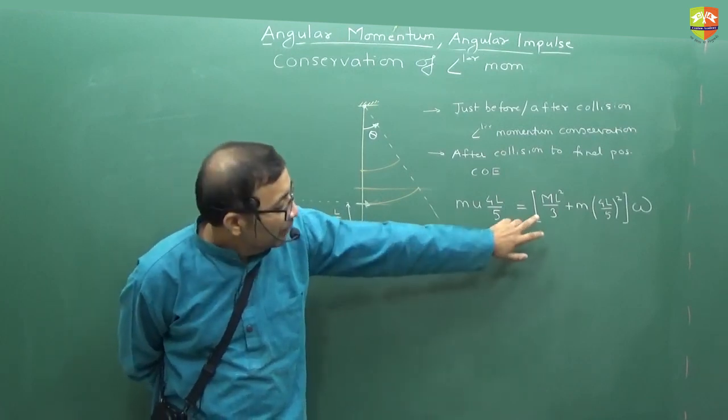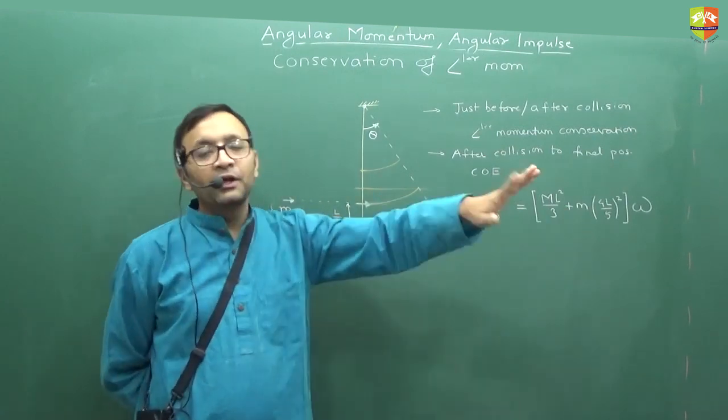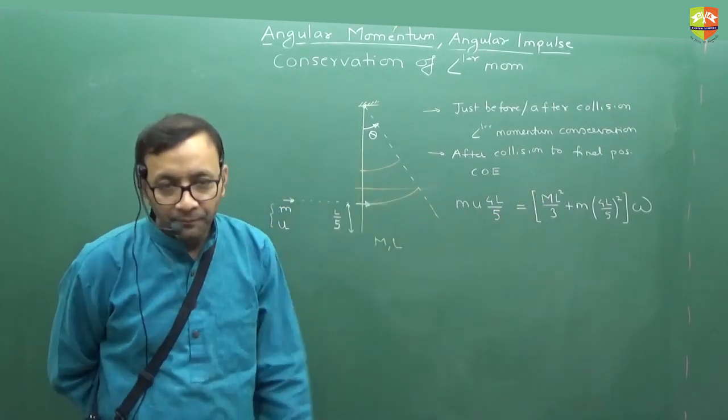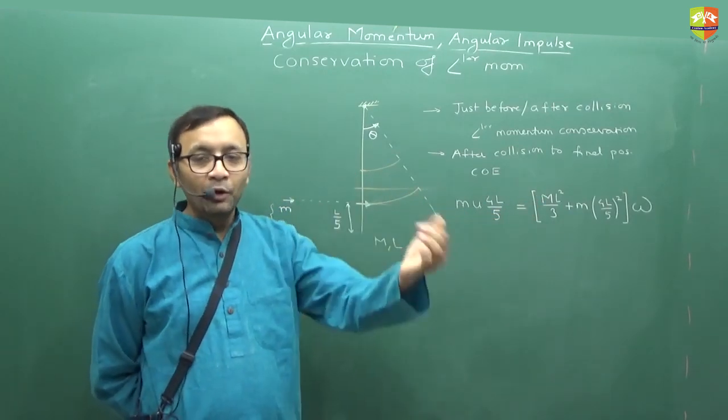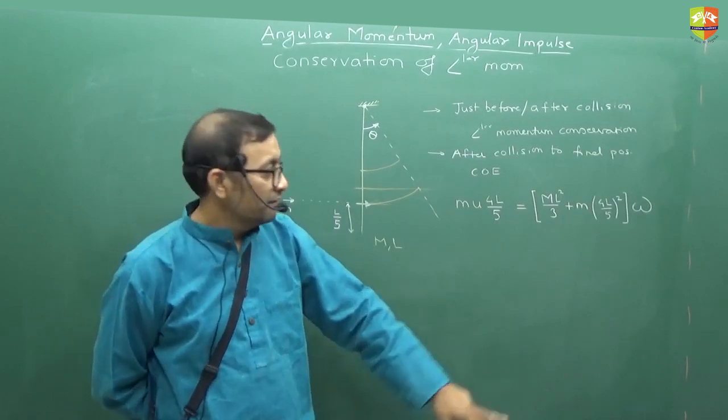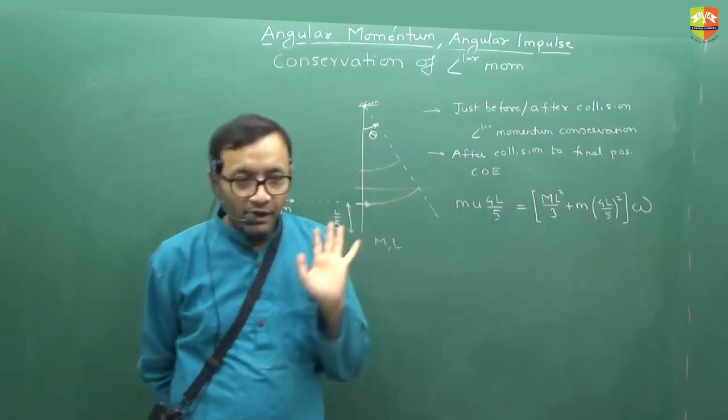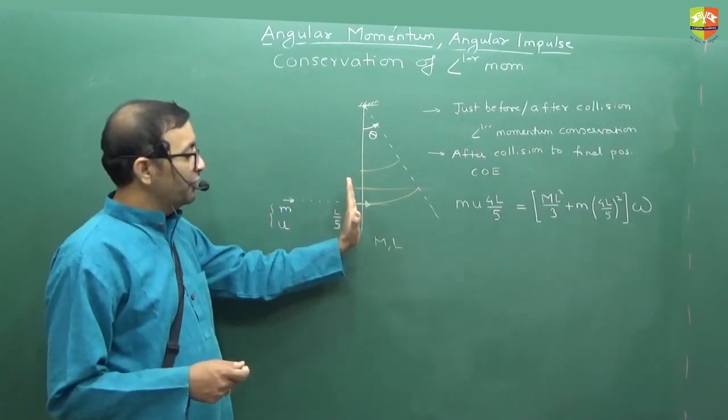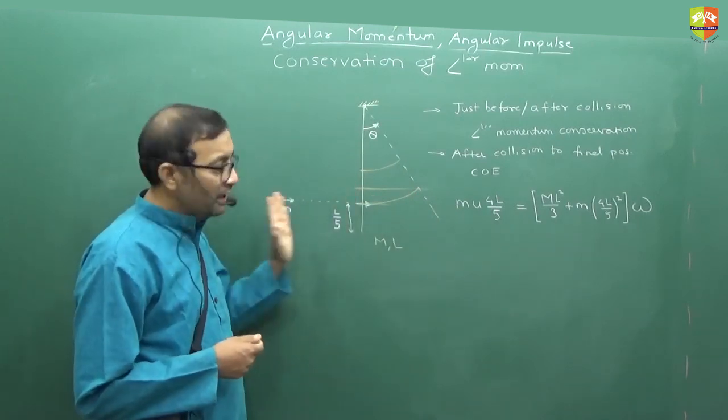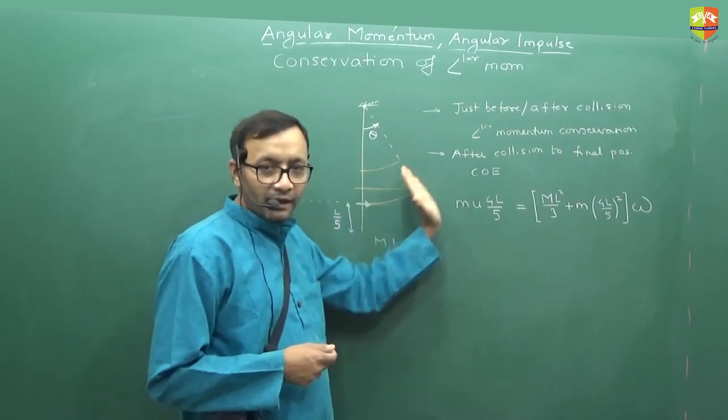Have you understood how to write this? Moment of inertia about fixed axis into omega is the total angular momentum of the rigid body. Now rigid body has bullet also a part of it. That is, I have to add its moment of inertia. So from here you get omega. And once you get omega, forget about the fact that collision has happened.